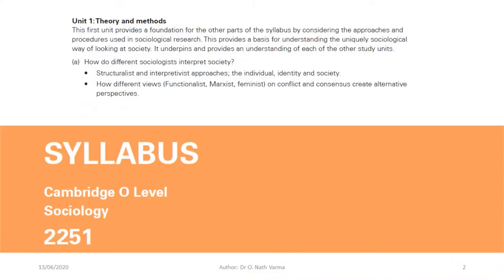We are following the syllabus Cambridge O-Level Sociology 2251. If you have a look at Unit 1, Theory and Methods, in the very first section, you are expected to understand how different sociologists interpret society — structuralist and interpretive approaches, the individual, identity and society, and how different views — functionalist, Marxist, feminist — on conflict and consensus create alternative perspectives.